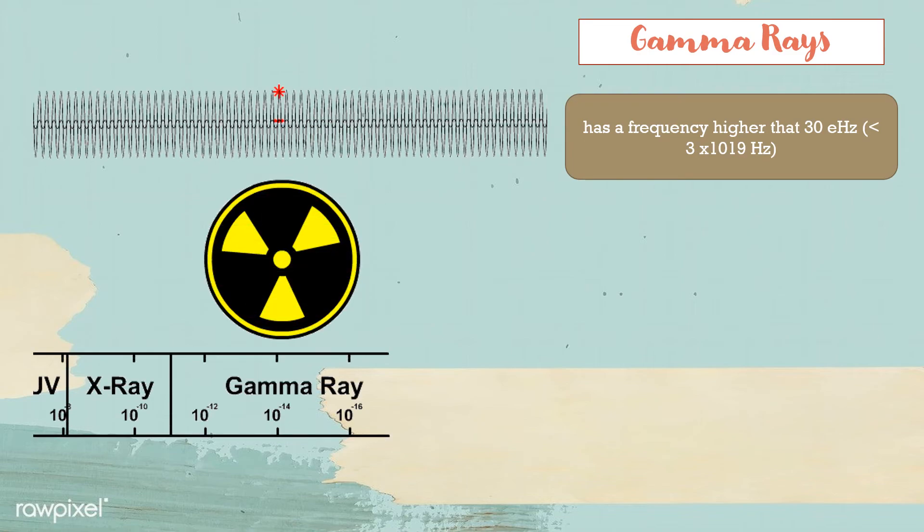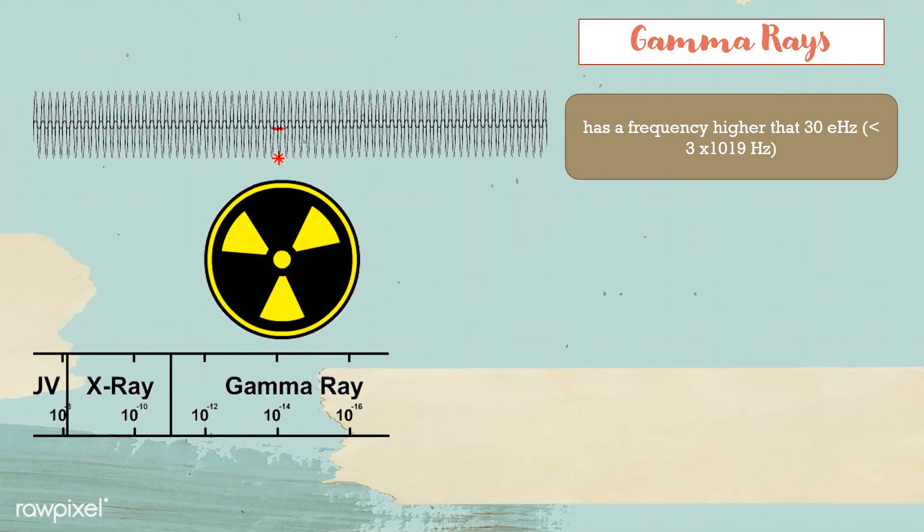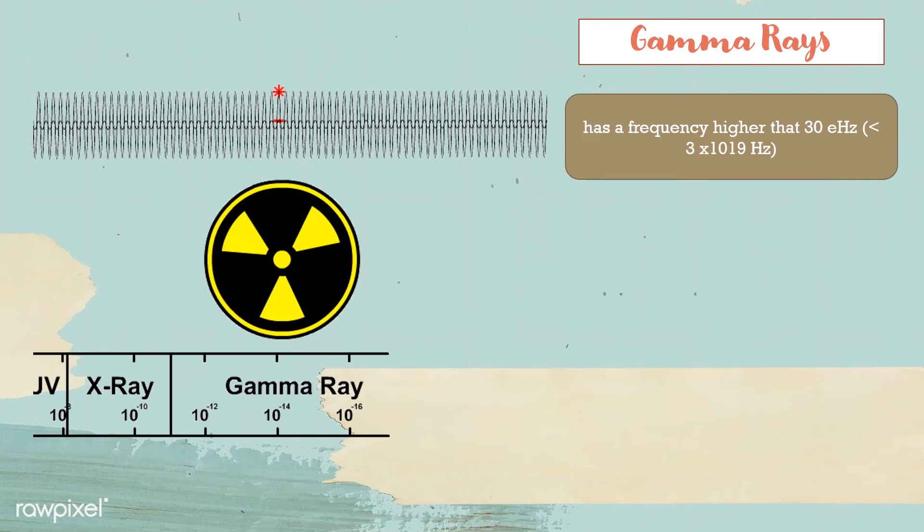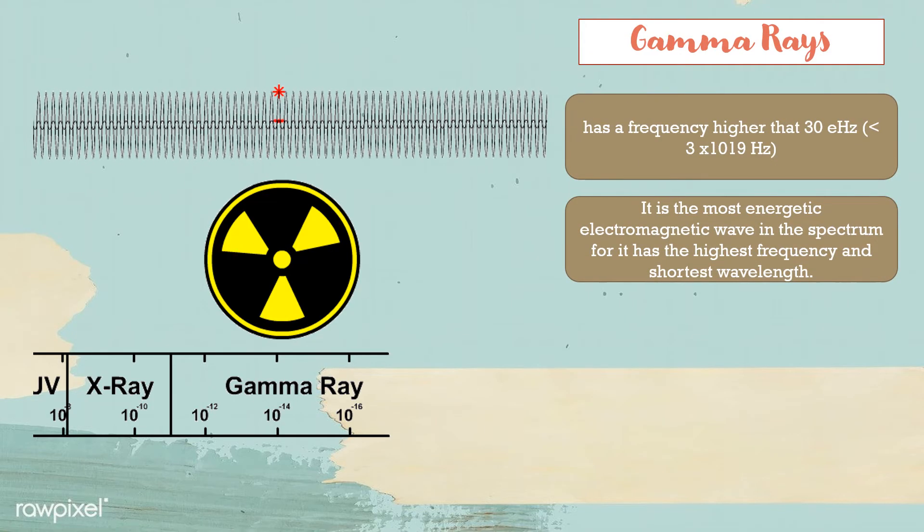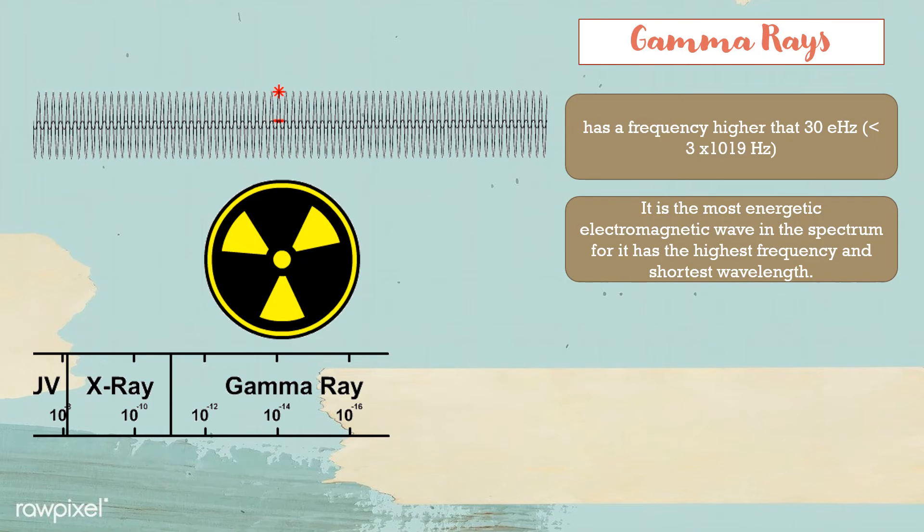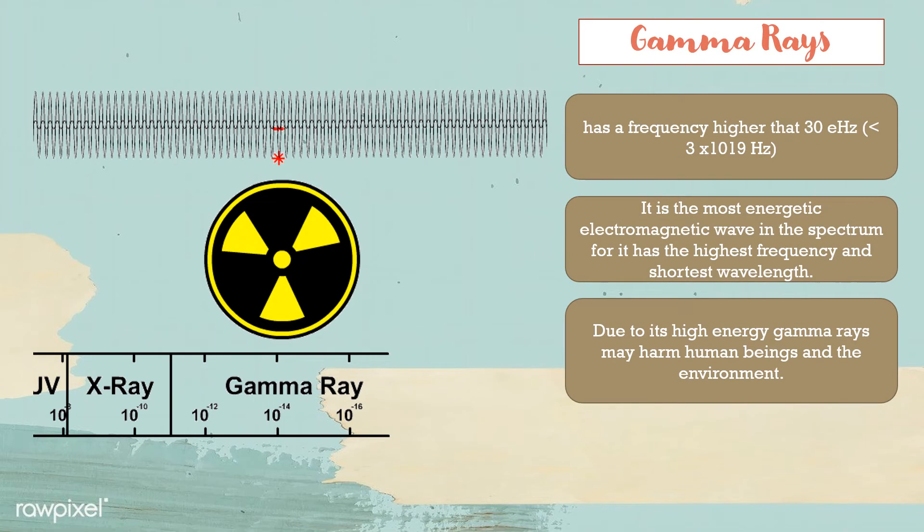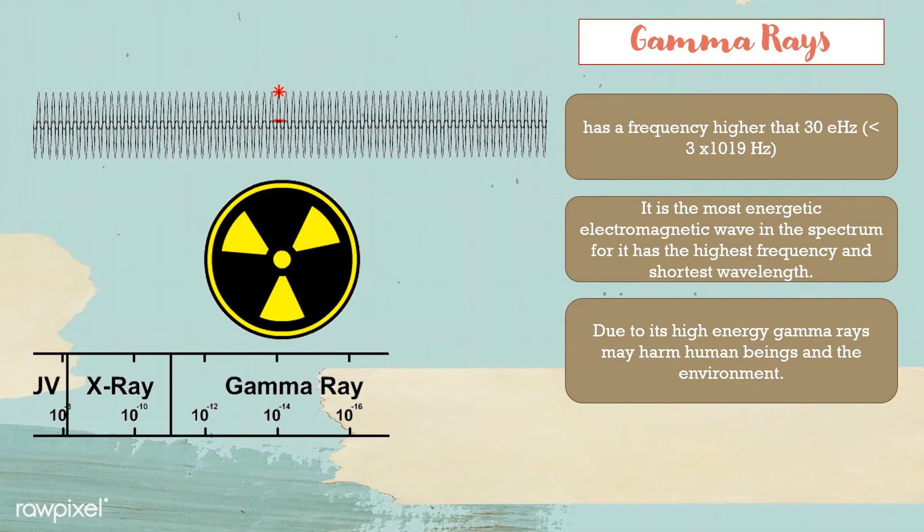The last type of EM wave is gamma rays. It has a frequency higher than 30 exahertz or higher than 3 times 10^19 hertz. It is the most energetic electromagnetic wave in the spectrum for it has the highest frequency and shortest wavelength. Due to its high energy, gamma rays may harm human beings and environment. And that is the gamma rays.